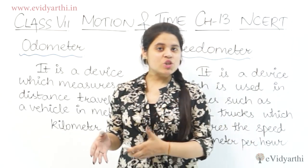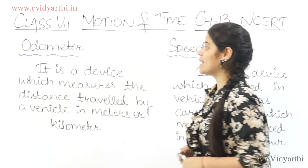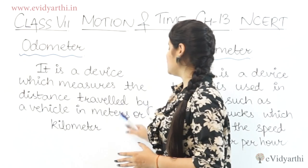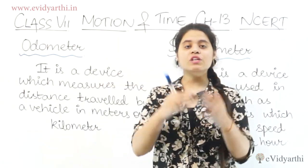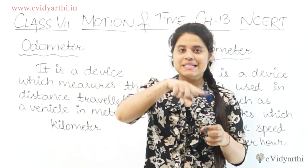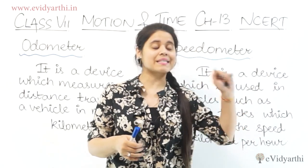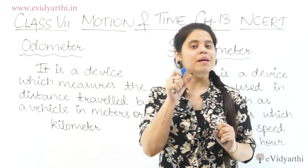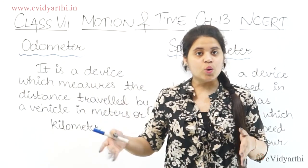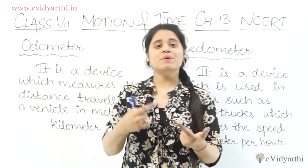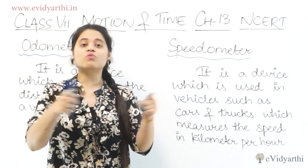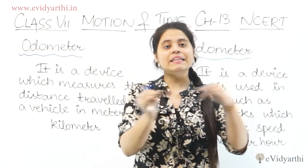There are two terms you need to know. The first one is Autometer (odometer). It is a device which measures the distance traveled by a vehicle in meters or kilometers. On a bike or scooter dashboard, it shows how many kilometers or meters the vehicle has traveled in total. This is especially useful when you need to track how many kilometers have passed since the last servicing.